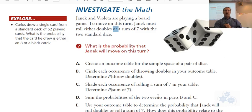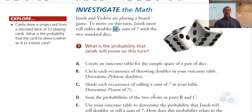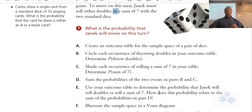The sum of the probabilities of the two events: six out of 36 plus six out of 36 gives 12 out of 36. So the probability that Yannick rolls doubles or a sum of seven is 12 out of 36, and that comes from the sum of the individual probabilities of those two events.